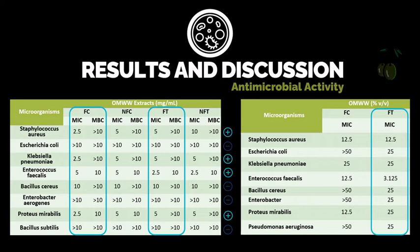Nevertheless, the olive mill wastewater obtained by the continuous method also evidenced good results against S. aureus, E. faecalis, and P. mirabilis.